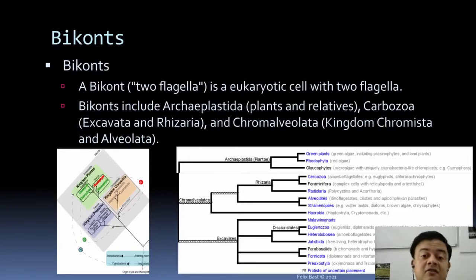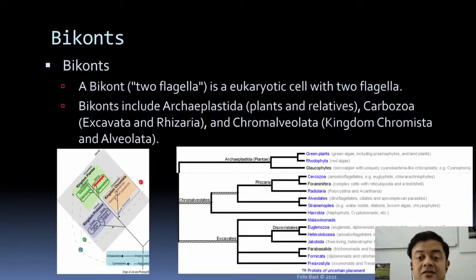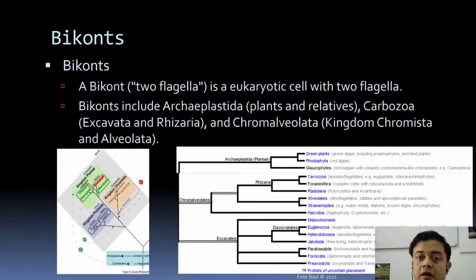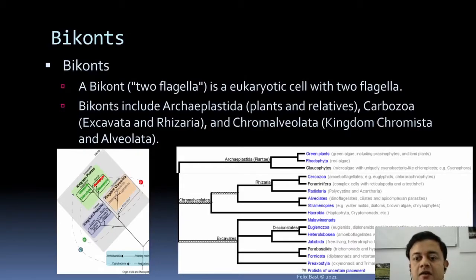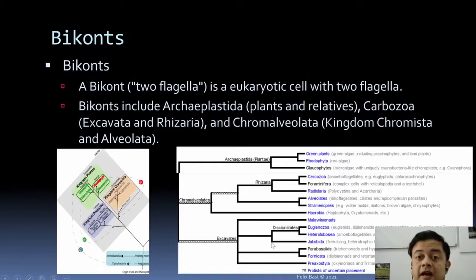Carbozoa includes Excavata and Rhizaria — though Rhizaria is sometimes grouped under the SAR supergroup. The third bicont group is Chromalveolata, comprising Chromista and Alveolates. Alveoli, like in our lungs, are small sacs — organisms in this group have such sacs in their cells. Kingdom Chromista is the brown algae kingdom. If you look at the interactive tree of life, this is how the classification appears — we will cover each group one by one.